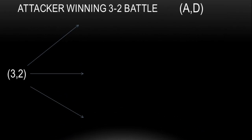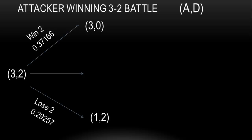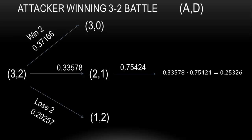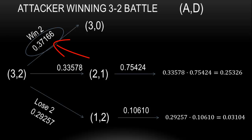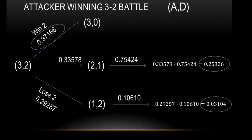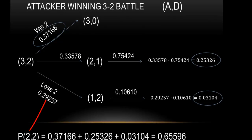The three-on-two has three branches. You can win two, and then the defender has no more armies. You can lose two, which means you still have one army left and the defender still has two — and you end up at a one-on-two. Or you can go one each — you lose one, the defender loses one — leaving a two-on-one. We already know the probability of winning a two-on-one battle, so multiplying through gives 0.25326. We know the probability of winning a one-on-two is small — a little over 10% — and multiplying through gives 0.03104. Adding all three contributing branches together, the probability of winning a three-on-two battle is 0.65596.